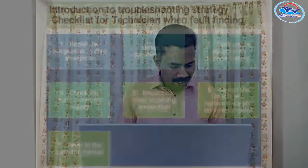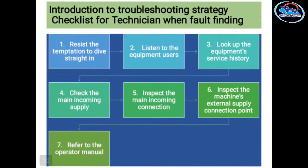For the fourth step, check the main incoming supply. Inspect the main incoming supply connections, including the plug, connectors, and mains incoming lead. Inspect the machine's external supply connection point. You can check the electrical section and connectors for any issues.